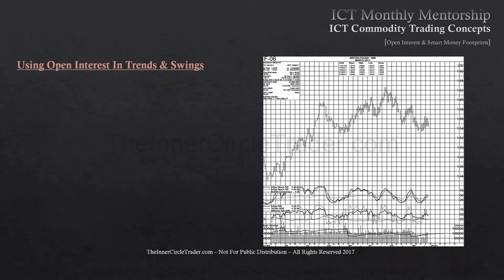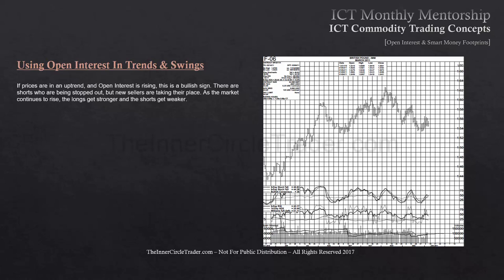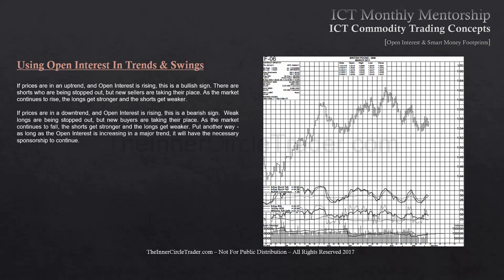Using open interest in trends and swings: if prices are in an uptrend and open interest is rising, this is a bullish sign. There are shorts being stopped out, but new sellers are taking their place. As the market continues to rise, the longs get stronger and the shorts get weaker. If prices are in a downtrend and open interest is rising, this is a bear sign. Weak longs are being stopped out, but new buyers are taking their place. As the market continues to fall, the shorts get stronger and the longs get weaker. As long as open interest is increasing in a major trend, it will have the necessary sponsorship to continue.